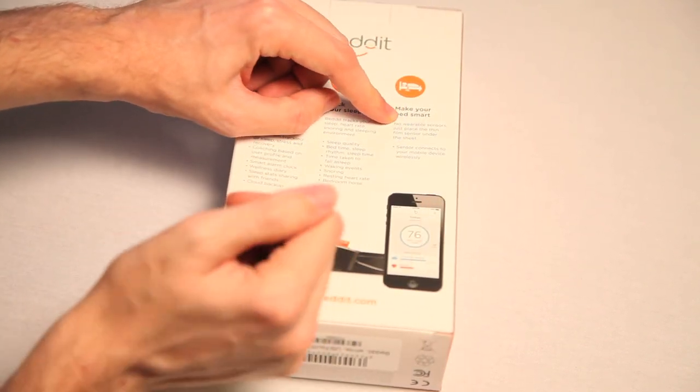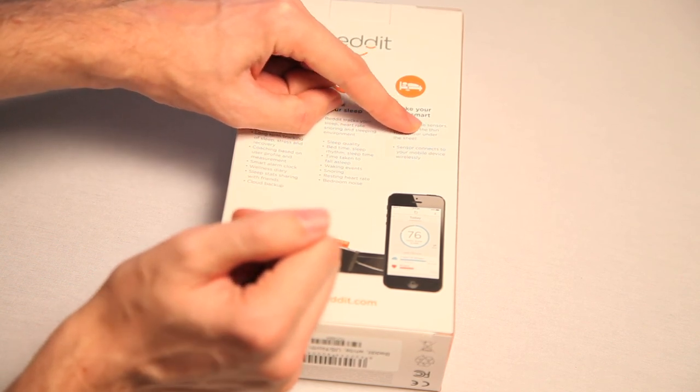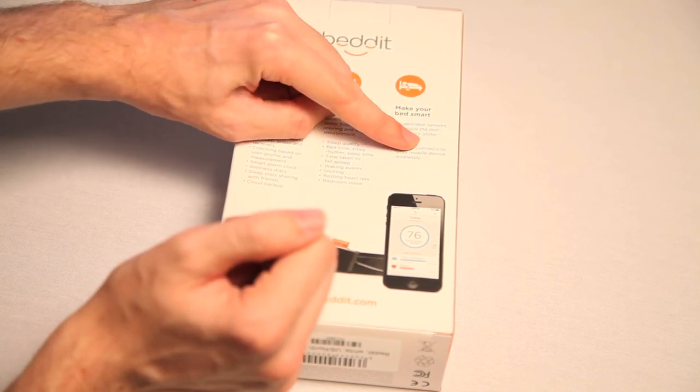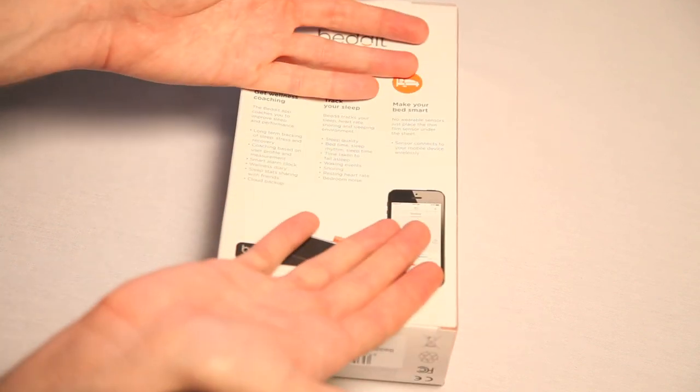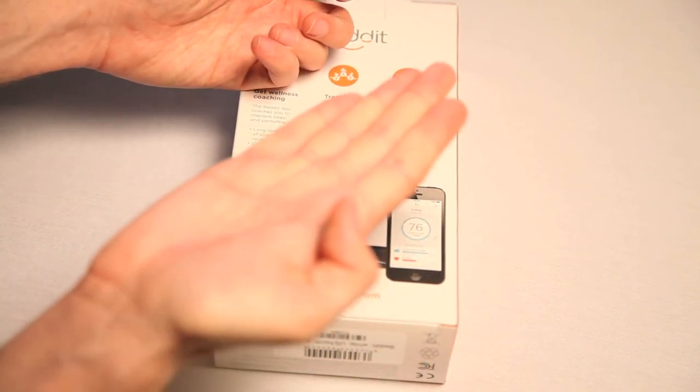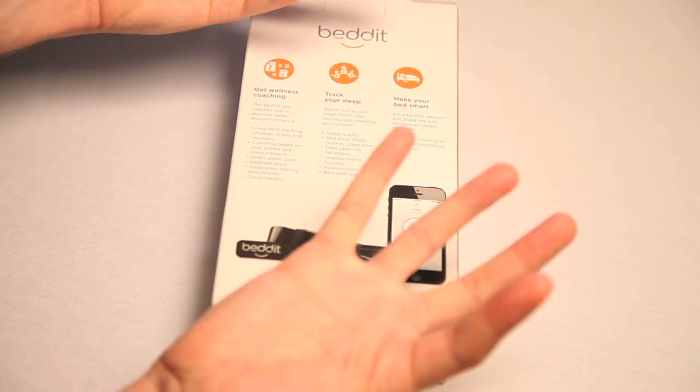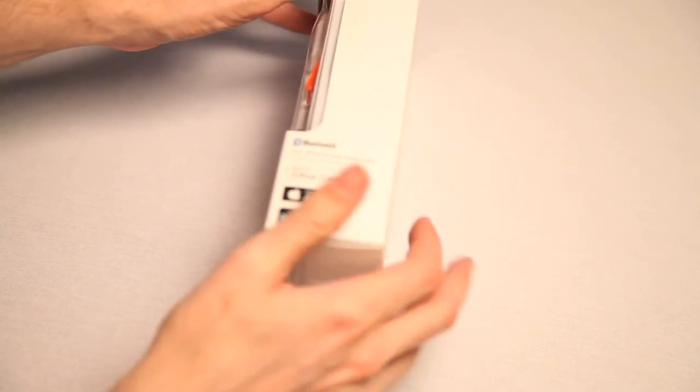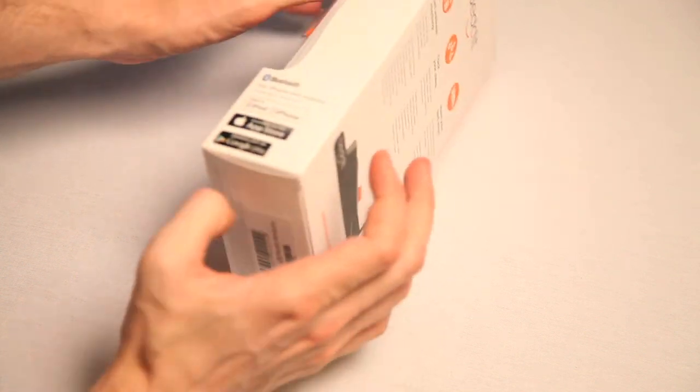Make your bed smart. No wearable sensors. Just place the thin film sensor under the sheet. Sensor connects to your mobile device wirelessly. But what if the bed bugs bite it? Then what? Then you made the bed bugs smart. And then we'll be overrun by smart bed bugs. Didn't think this through, did you, Bed-It? Stupid.